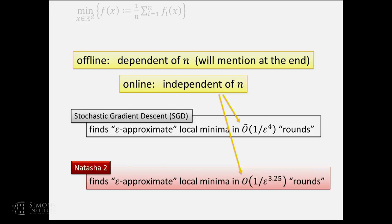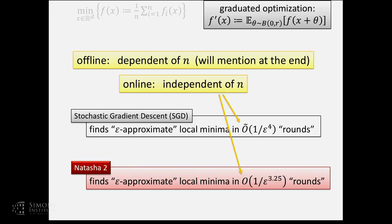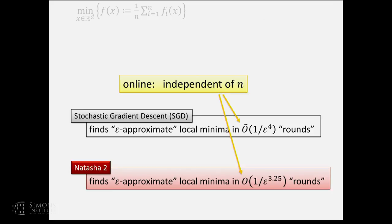The reason we focus on the online setting is because N could be really huge — not only from the number of input training data, but also from graduated optimization. If we do a perturbation of the function, there suddenly become infinitely many functions being averaged, and therefore designing online algorithms is really very important.